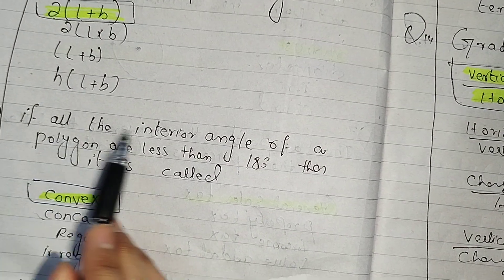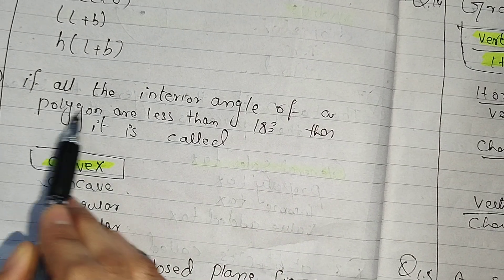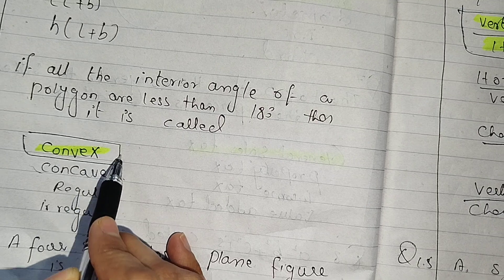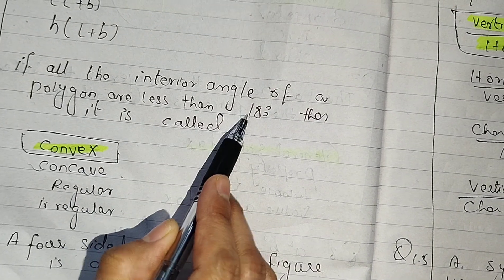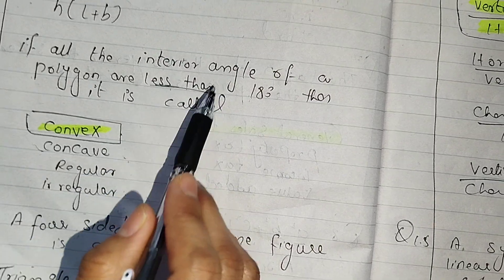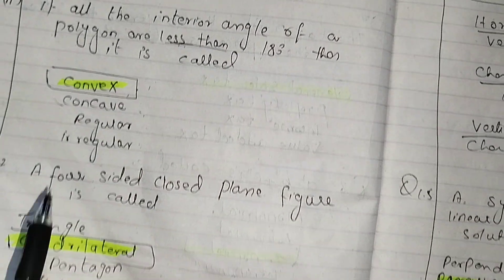Next, if all the interior angles of a polygon are less than 180 degrees, they are convex. And if greater than or more, they are concave. So the answer is less than is convex.